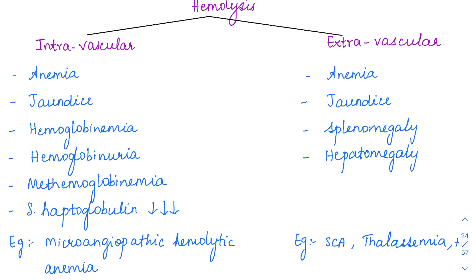Both intravascular and extravascular hemolysis are going to result in anemia and jaundice. Because there is hemolysis, RBCs are lost resulting in anemia. Whenever there is RBC lysis, hemoglobin is going to be released, and the released hemoglobin is further broken down into bilirubin, which is the end product. Elevated bilirubin results in jaundice. In intravascular hemolysis, since the RBCs are broken down in the vessels, hemoglobin released is increased in the blood, causing hemoglobinemia. This hemoglobin also gets converted into methemoglobin, causing methemoglobinemia.